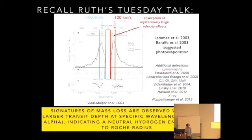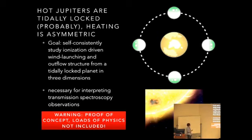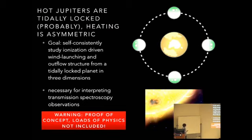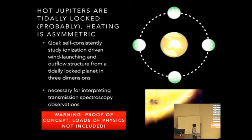The other thing we know about hot Jupiters is that we think they should be tidally locked, where one side is constantly blasted by irradiation from the star and a dark, colder night side. This is why Kristen spent the last few days talking about these very interesting circulation models. The heating and therefore all of the features associated with these flows should be somewhat asymmetric because you have one side getting blasted and the other not getting any of these photons. If you want to really interpret this transmission spectroscopy, you need to go to full 3D to understand what these hydrodynamic flows are going to look like.